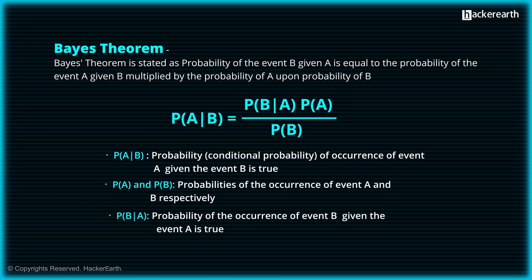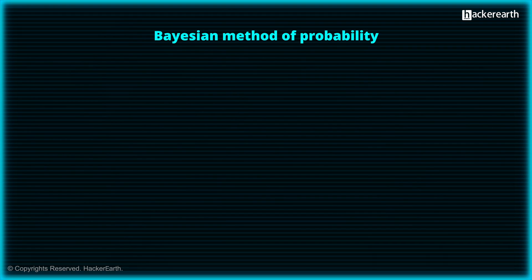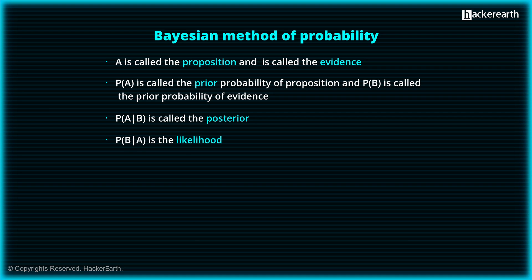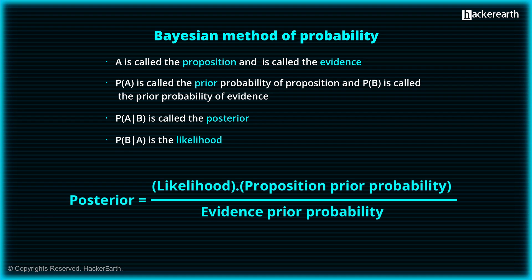Let us look at commonly used terminology in the Bayesian method. A is called the proposition and B is called the evidence. P(A) is called the prior probability of the proposition and P(B) is called the prior probability of the evidence. P(A|B) is called the posterior and P(B|A) is the likelihood. In summary: posterior = likelihood × prior probability / evidence prior probability.